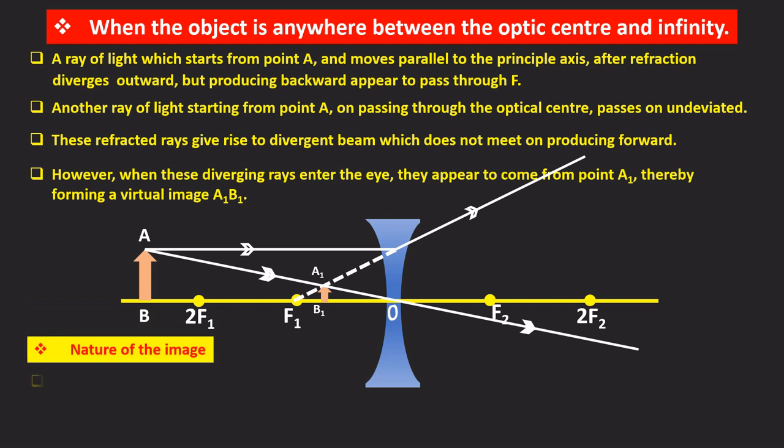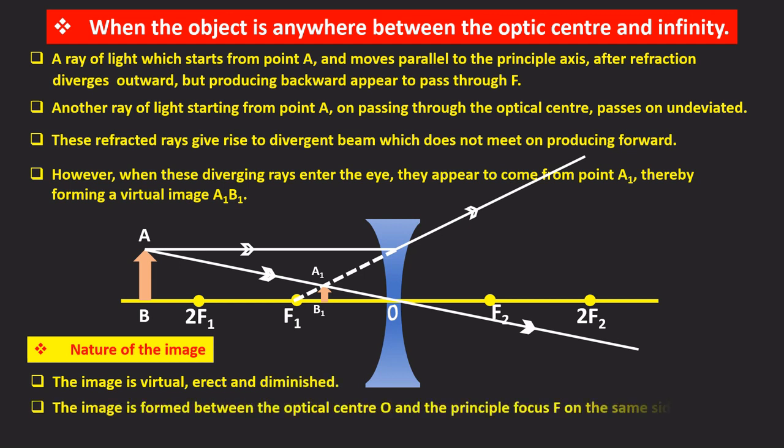So let us see what is the nature of the image. The image is virtual, erect and diminished. The image is formed between the optical center O and the principal focus F on the same side as of object.